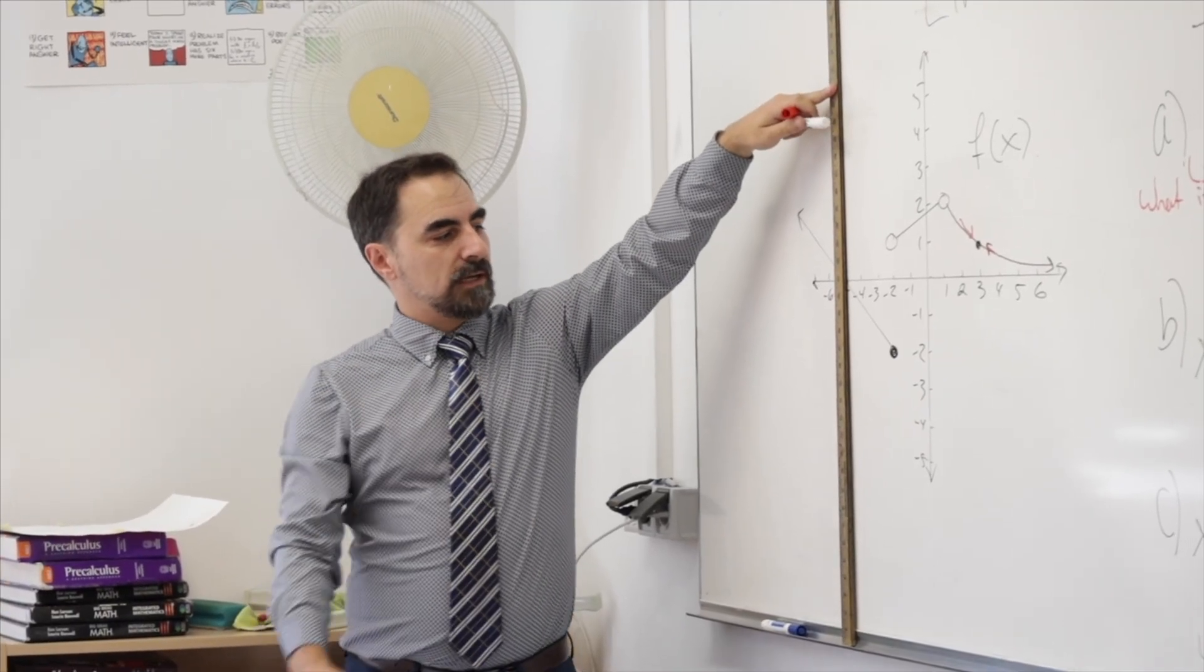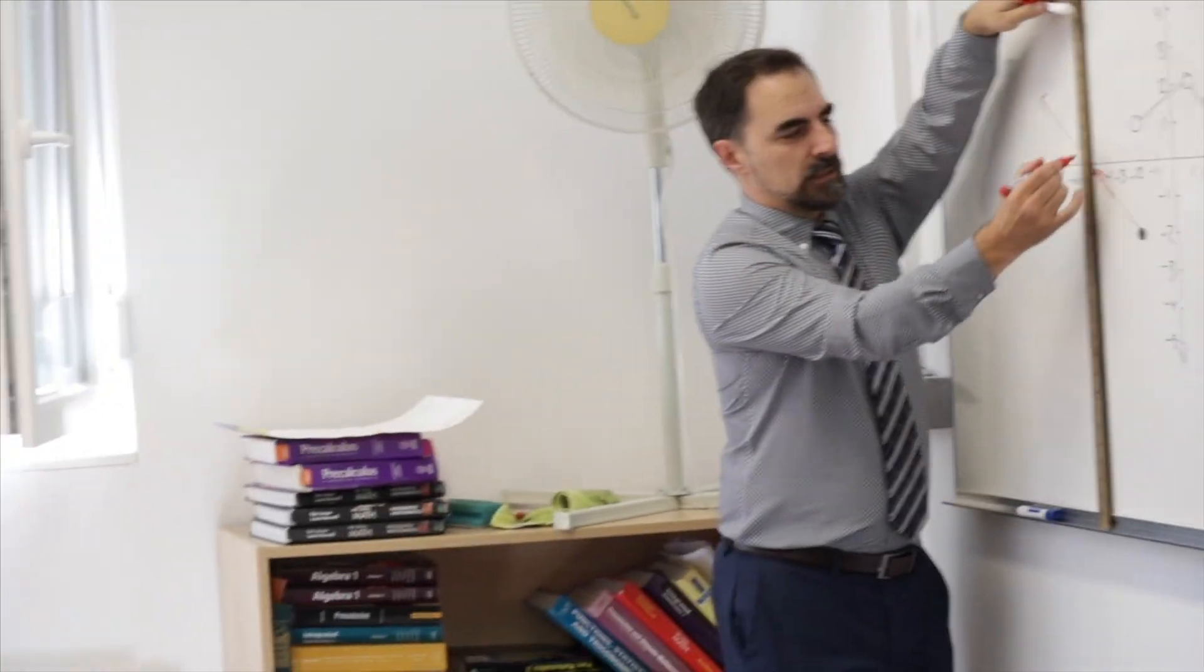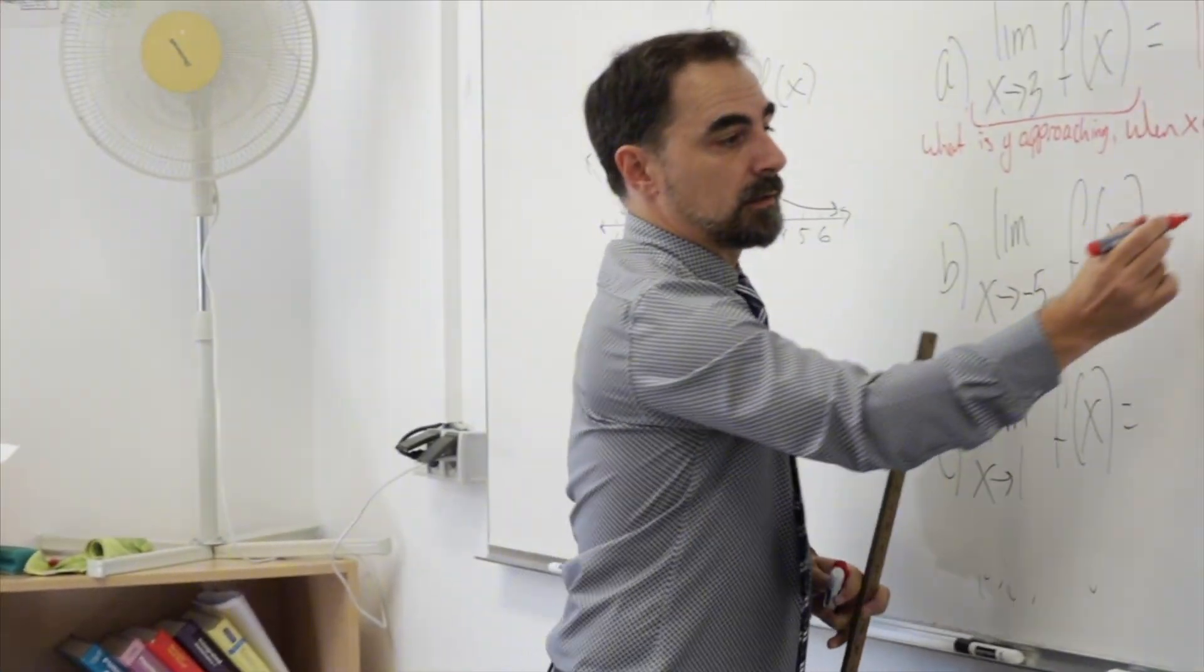Peter, as X approaches negative five, what Y value does it look like the graph is approaching? Zero. Zero. That's it. It doesn't matter that the graph is zero there or the Y value is zero.